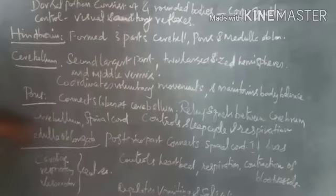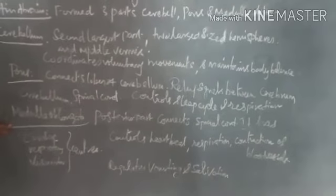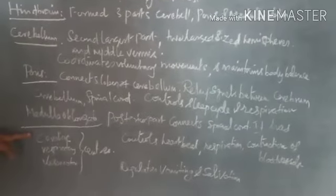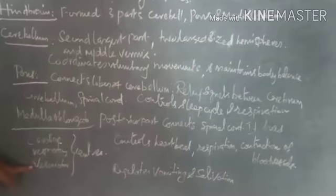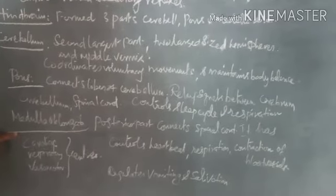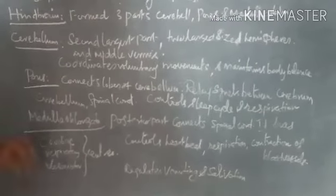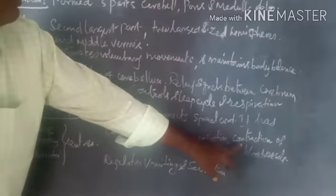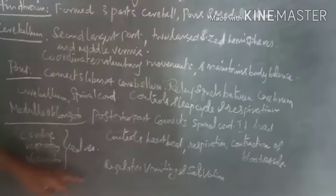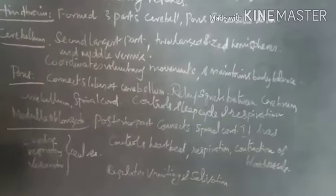The medulla oblongata is the posterior part of the brain and connects the spinal cord to the brain. It has three centers: the cardiac center, which controls heartbeat; the respiratory center, which controls breathing; and the vasomotor center, which controls the contraction of blood vessels. It also regulates vomiting and salivary secretion.